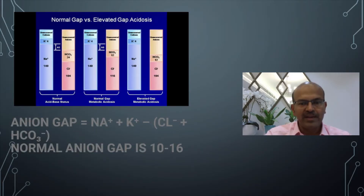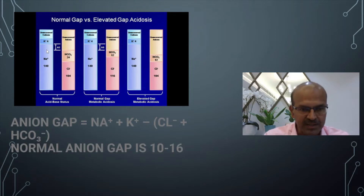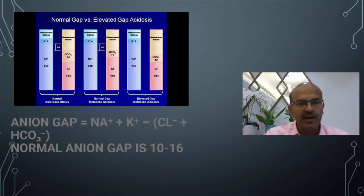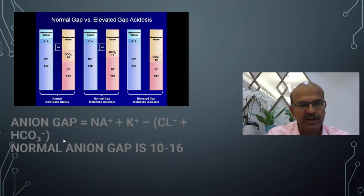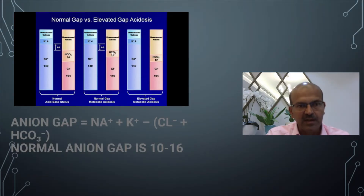The anion gap is calculated as sodium plus potassium minus chloride minus bicarbonate. In the normal picture the anion gap stays stable. There are conditions where bicarbonate is lost — for example in the urine or in stools during diarrheal episodes — but chloride increases to compensate (hyperchloremia), so the anion gap remains normal.